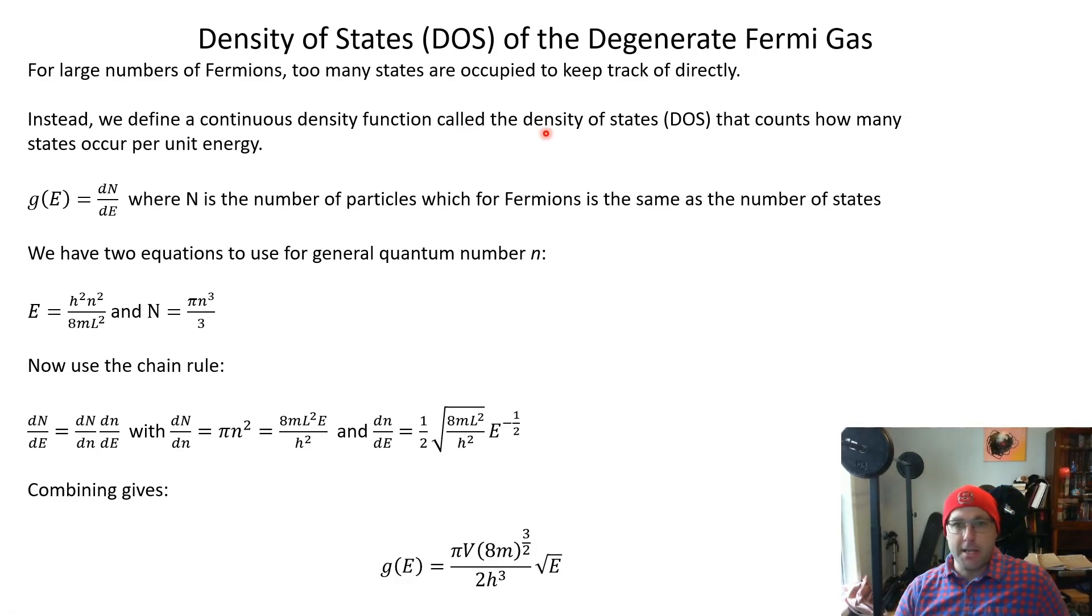I'm going to call the DOS, the density of states, G as a function of energy. It's going to be the rate of change of the number of states per unit energy. N is the number of particles from our previous notation. But for fermions, there's one particle per state, so this is an easy substitution.